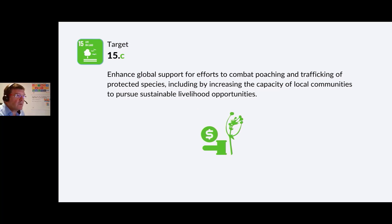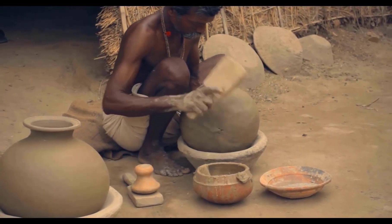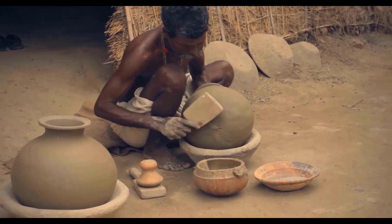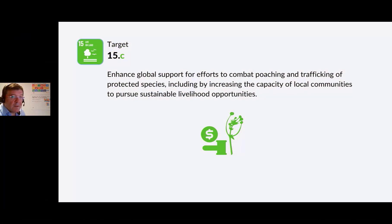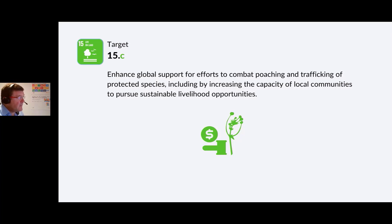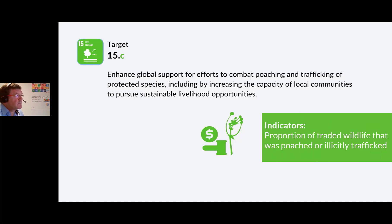Target 15c: Enhance global support for efforts to combat poaching and trafficking of protected species, including by increasing the capacity of local communities to pursue sustainable livelihood options. It's easy to frown upon poachers, but we must ask why poaching is occurring — could they be trying to feed their family or survive? We must make all possible efforts to avoid poaching or illicit trafficking. The indicator is monitoring the proportion of traded wildlife that was poached or illicitly trafficked.